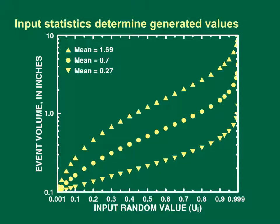This graph shows examples of the distribution of generated event volume values. The vertical axis shows the event volume in inches, and the horizontal axis shows the model-generated uniform random number UI. In this example, the minimum value was set to 0.1 inch and three mean values were selected. The equation was written so that storm event variables increase with increasing values of UI. Three mean event volume values were selected to represent the station values in SELDM, ranging from 0.27 to 1.69 inches of precipitation. The 0.7 value represents the mean value among all stations in the dataset. All three generated samples have a lower bound of 0.1, but the event volumes rapidly diverge as the mean value is increased.